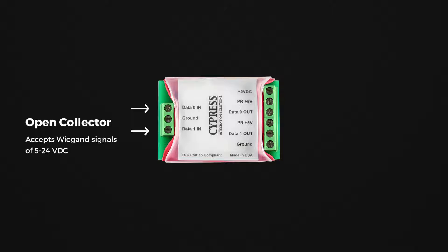There are six pins on the J2 header: plus 5 volts DC, PR plus 5 volts, Data Zero Out, PR plus 5 volts, Data One Out, and Ground.